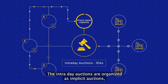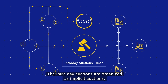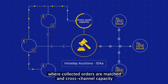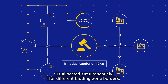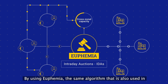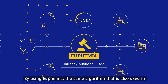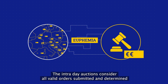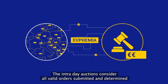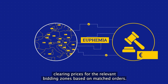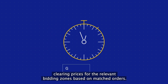The intraday auctions are organized as implicit auctions where collected orders are matched and cross-zonal capacity is allocated simultaneously for different bidding zone borders by using Euphemia — the same algorithm that is also used in the day-ahead market coupling. The intraday auctions consider all valid orders submitted and determine clearing prices for the relevant bidding zones based on matched orders.